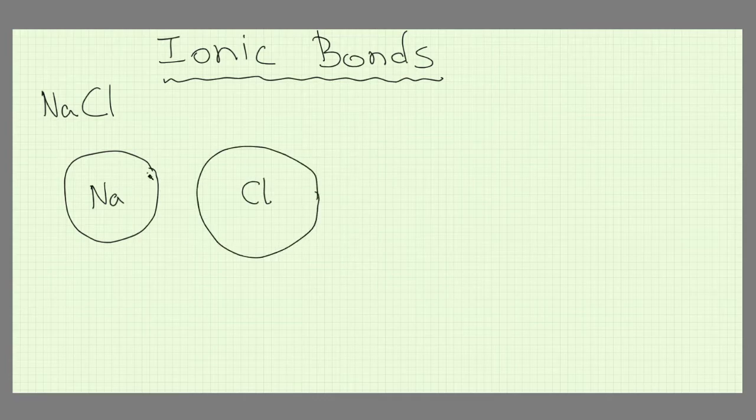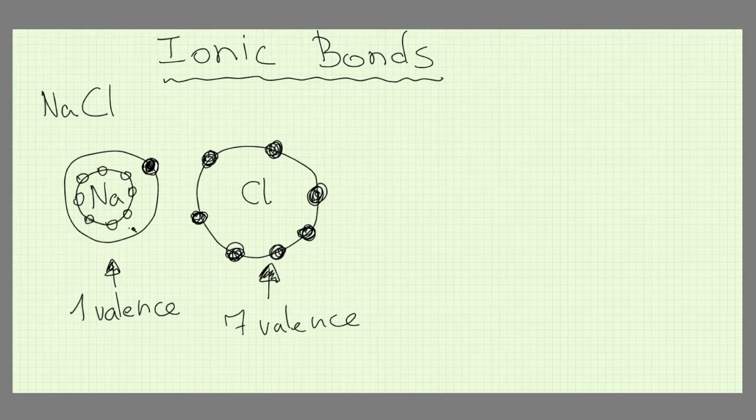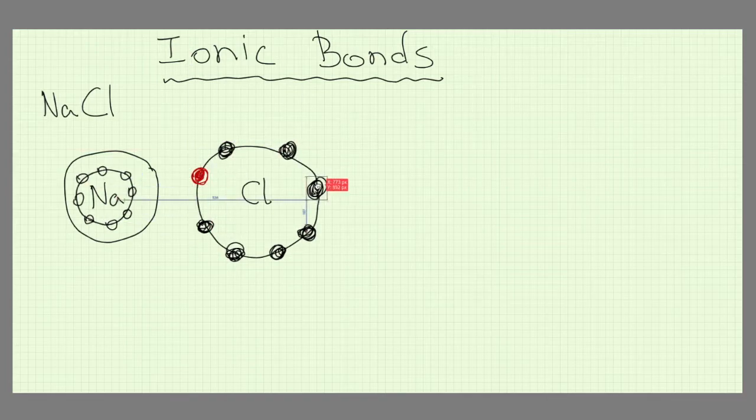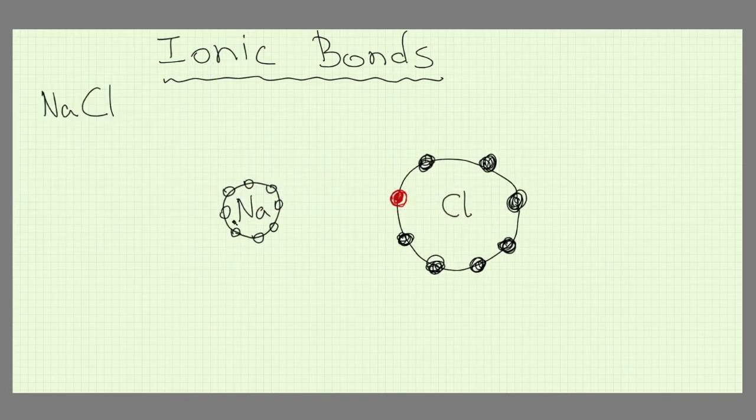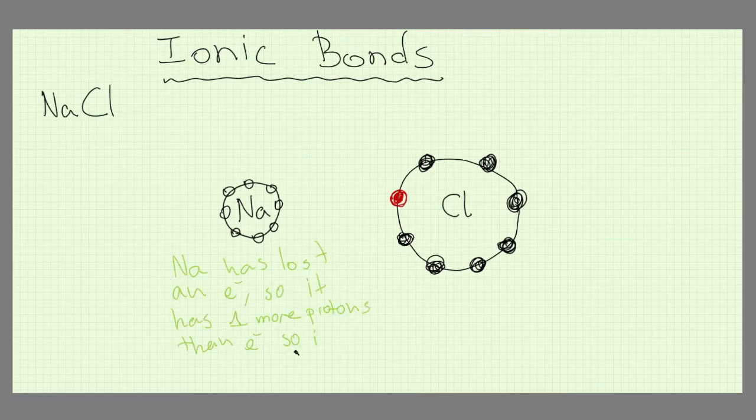Let's look at an ionic bond, say table salt NaCl. Sodium Na has one valence electron and wants to lose it while chlorine Cl has seven valence and needs one more to be filled. Na will give Cl its unwanted valence electron and Cl will gladly accept it.